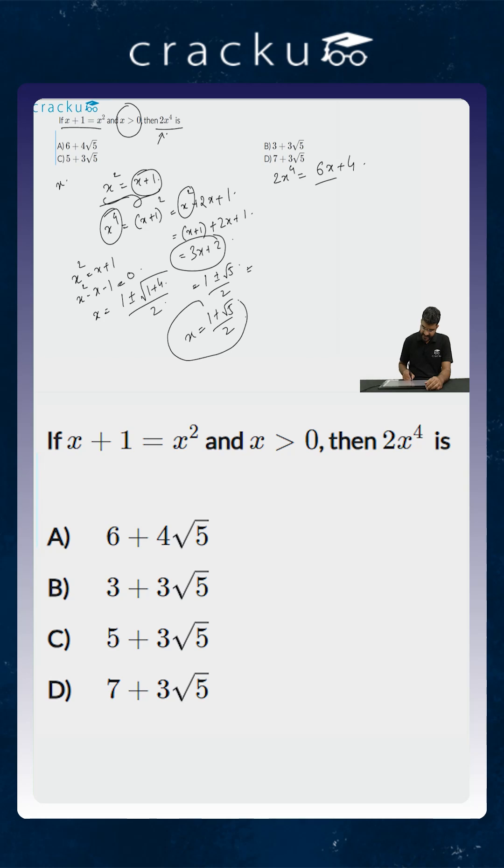Now as we have discussed earlier, to find out the value of 2 into x to the power 4, we need not raise this to the power of 4. We have already found out that 2x to the power 4 is equal to 6x plus 4. So we can just simply multiply this with 6.